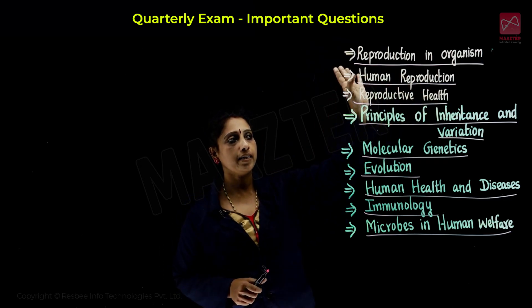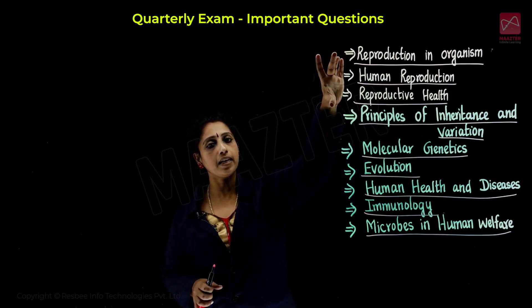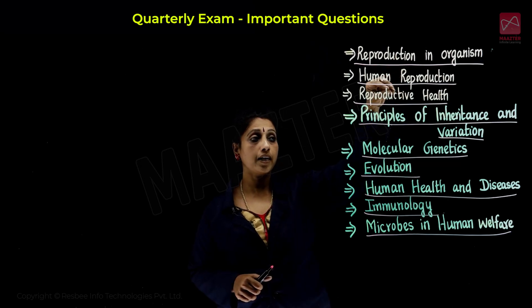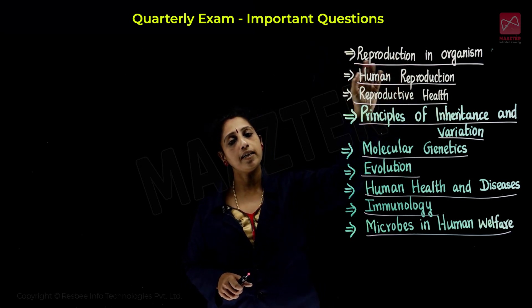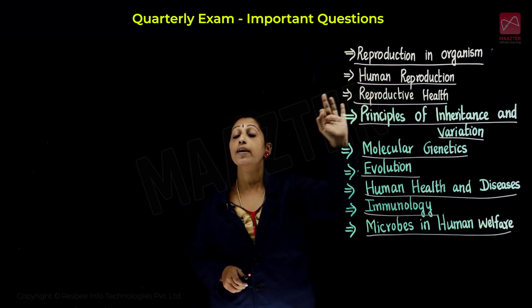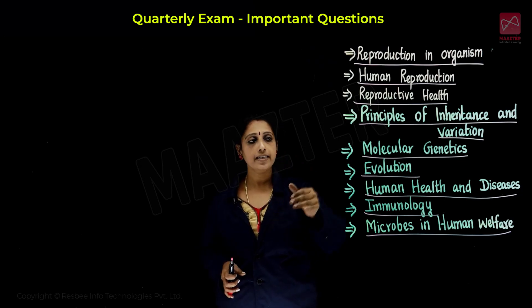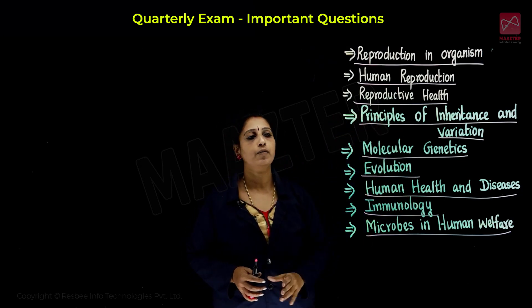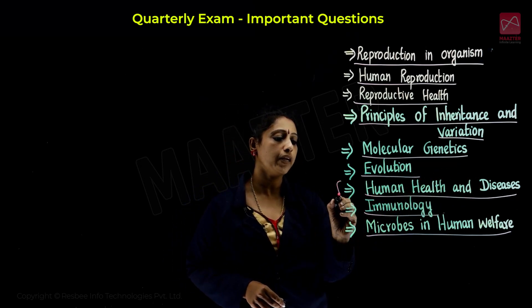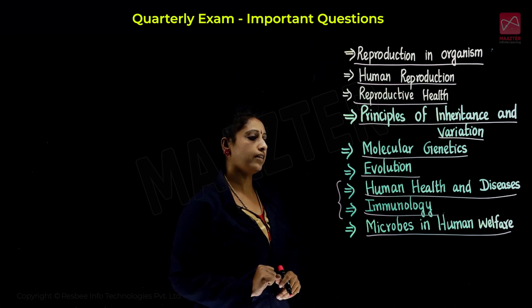Now we are going to look at Reproduction in Organism, Human Reproduction, and Reproductive Health — these are the first three important questions we need to know. Chapter 3 is very important, and we expect about five more questions from there. We will approach this from the first mid-term video. We will go through the next syllabus, starting with Human Health and Diseases and Immunology, as these two are a slightly easier syllabus — that's why we start with them first.